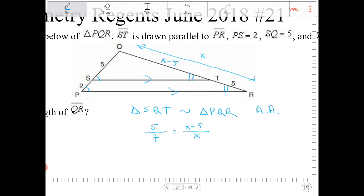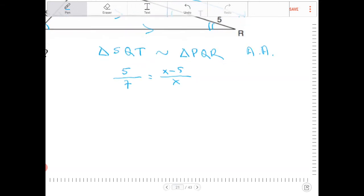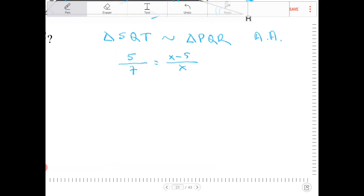So I went from a geometry problem, now it's down to an algebra problem. I'm going to cross multiply both sides. So I get 5X is equal to 7 times X minus 5. Let's distribute the 7. I get 7X minus 35 is equal to 5X.